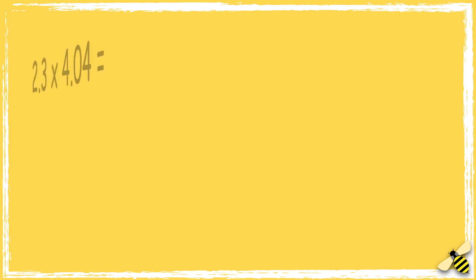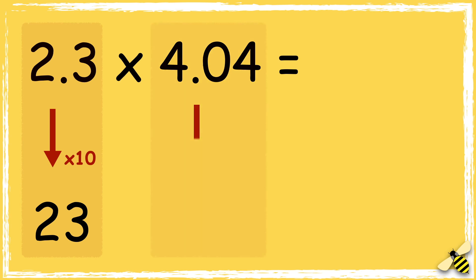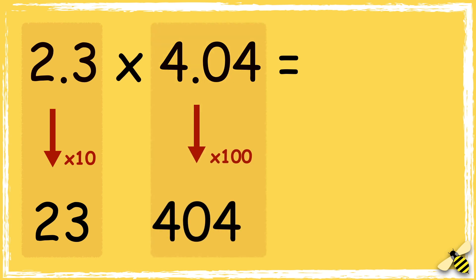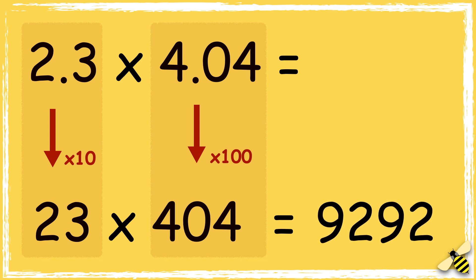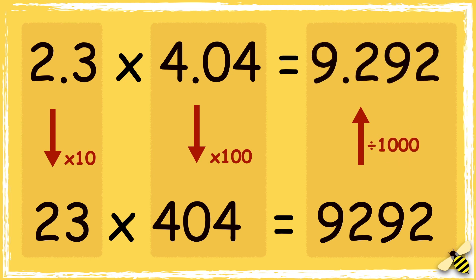Let me explain what we did with the decimal points. We started with 2.3 multiplied by 4.04. We multiplied 2.3 by 10, and we multiplied 4.04 by 100. So 23 multiplied by 404, which was 9292. As we had previously multiplied the factors by 10 and by 100, the answer is 1000 times bigger than it should be. So we need to do the inverse and divide the answer by 1000, which gives us the answer 9.292.